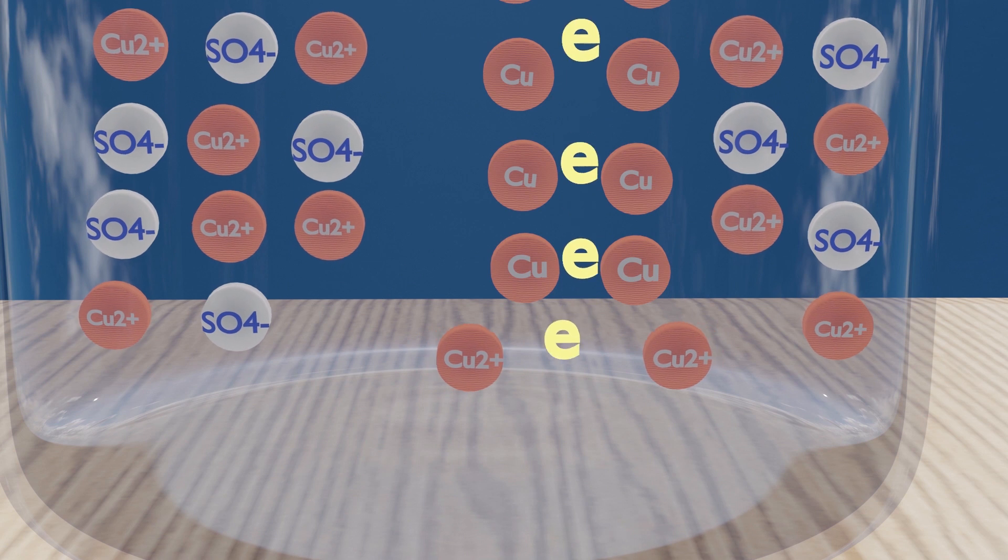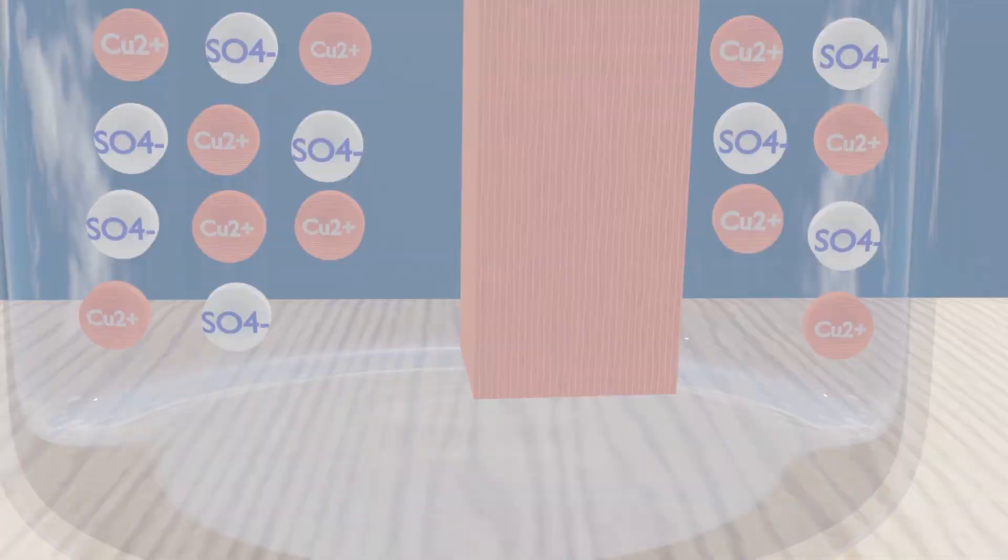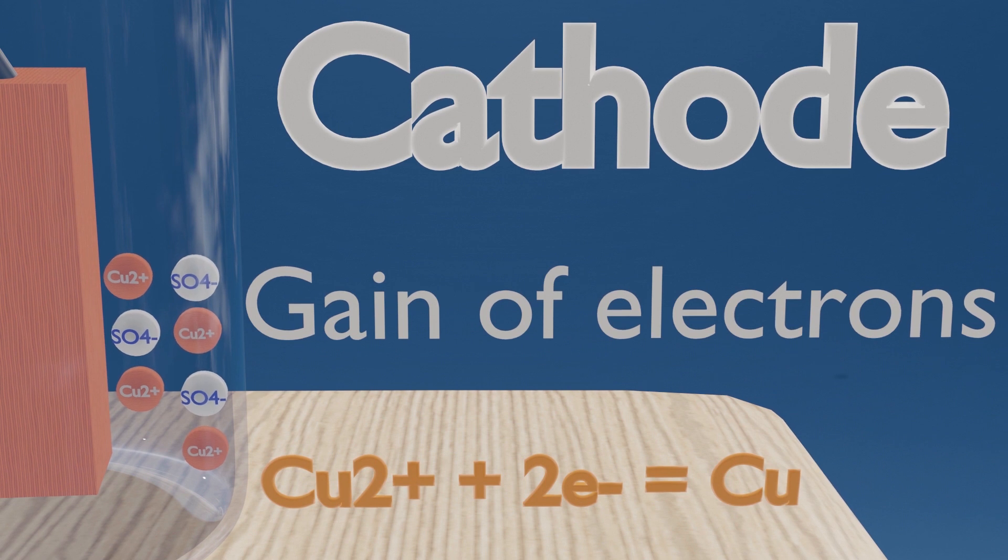In the other beaker, Cu2+ ions gain the electrons of the zinc and become copper atoms. This half reaction is a reduction reaction, and this half cell is called cathode.